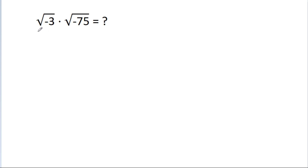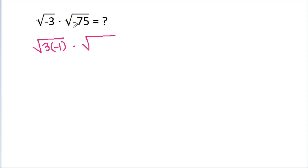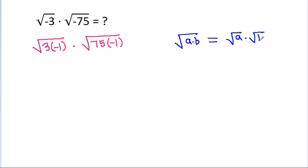We have to find the value of square root of minus 3 times square root of minus 75. So, it is square root of (3 times minus 1) times square root of (75 times minus 1). And a square root of a times b is equal to square root of a times square root of b.